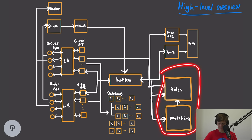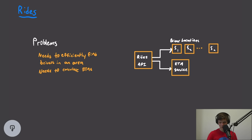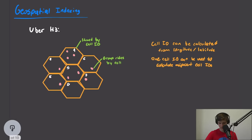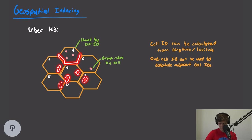Now let's look at the rides and matching services. The ride service needs to efficiently find drivers in a given area and calculate the ETA. For the ETA, we can either build our own service or use Mapbox or Google Maps. For driver locations, we can't index based on an exact location — we need to index by area. To do that, we'll use an algorithm Uber developed called H3, which splits the world into hexagonal areas and assigns an ID to each cell.